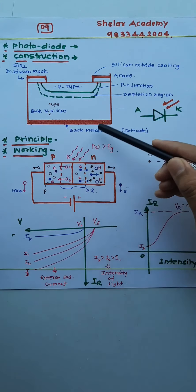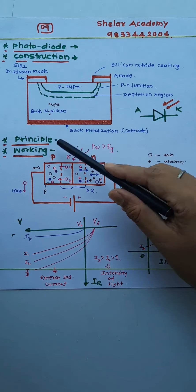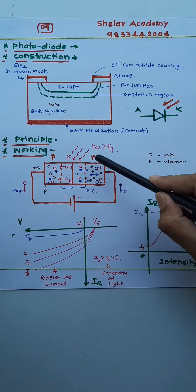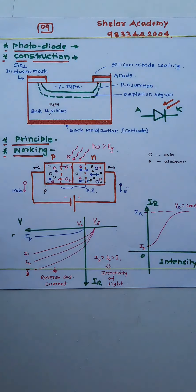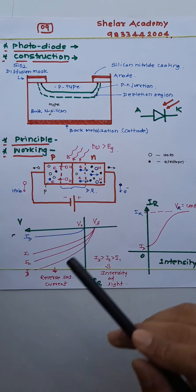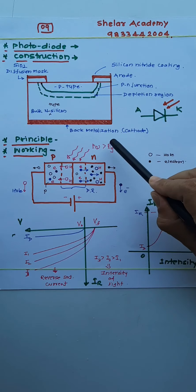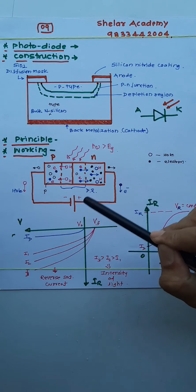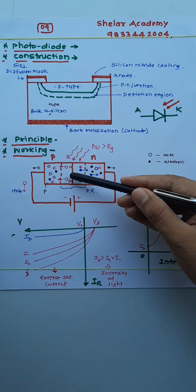Light is incident in the form of photons. The frequency of light decides the energy of each incident photon, while the number of photons incident on the surface per second decides the brightness or intensity. Let photons of energy hν, which is greater than the band gap energy — the barrier potential at the depletion layer — be incident on the depletion layer.